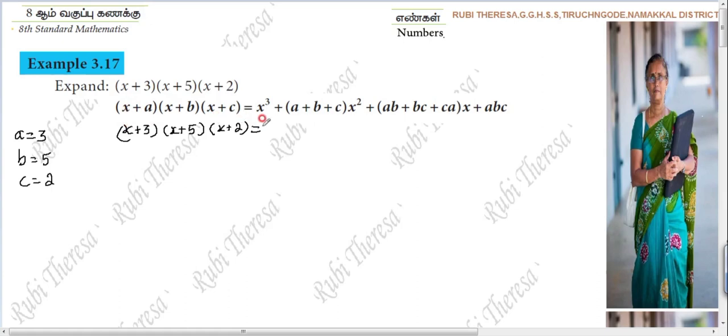x, x only. So x cube. Here there is no change, x cube. Suppose if you have Y, means you have to write Y cube. Same variable only here. So x cube. So x cube plus A plus B plus C. A means very good, 3 plus 5 plus 2.